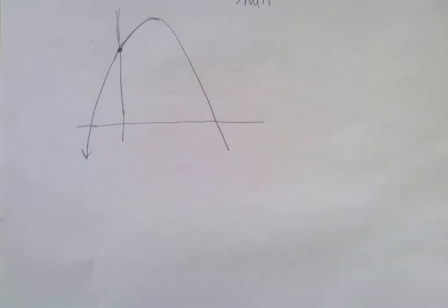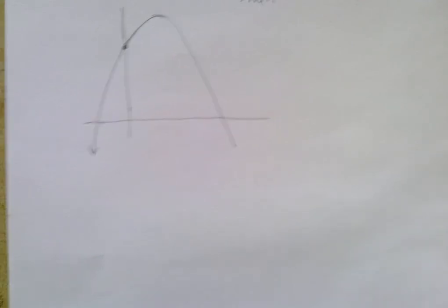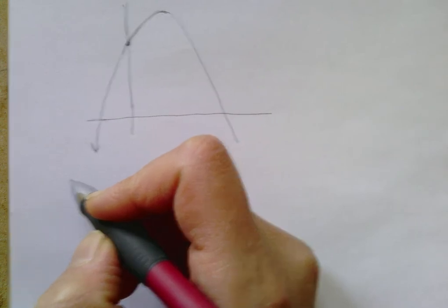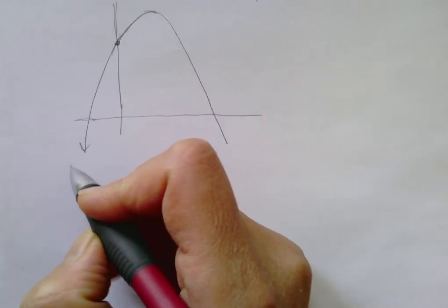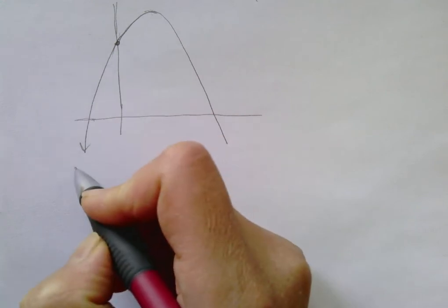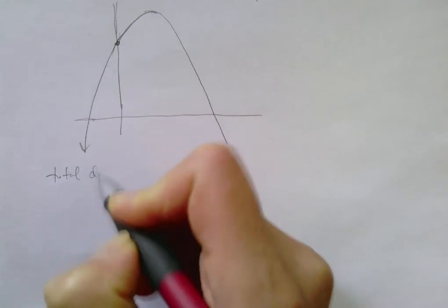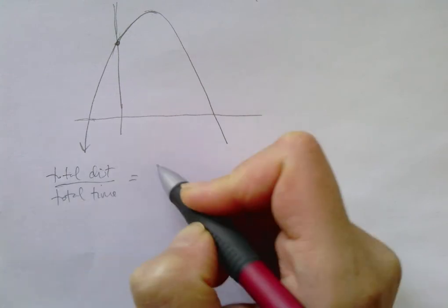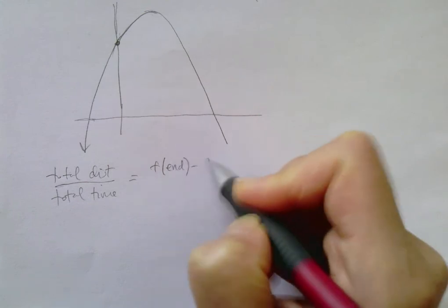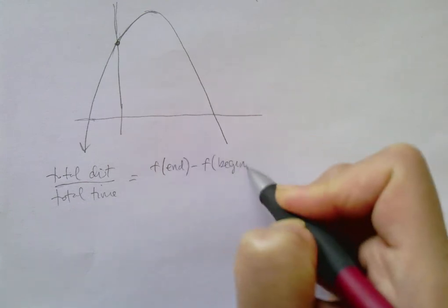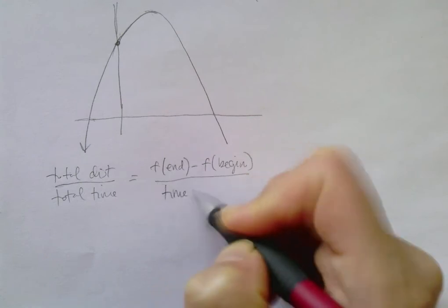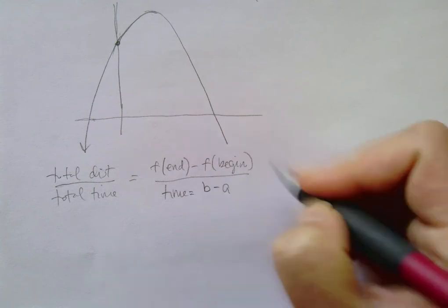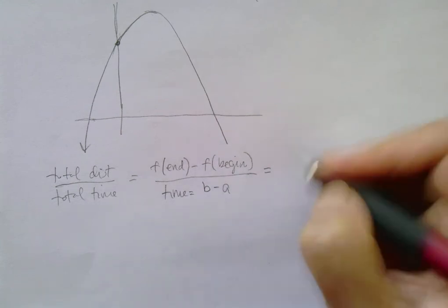So I'm going to finish this lecture with just indicating another way that you can express this concept of average velocity. So instead of what we've been doing, which was total distance over total time equals f at the end point minus f at the beginning point over time, which we expressed as b minus a, you could also write it as f of the beginning point...